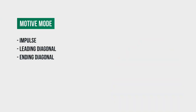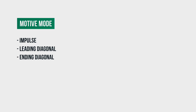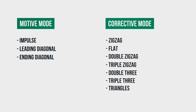You already know that there are three different types of waves forming in a motive mode: impulse, the leading diagonal, and ending diagonal. Also there are seven types of waves formed in the corrective mode: zigzag, flat, double zigzag, triple zigzag, double three, triple three, and triangles. This classification contains all types of waves that exist in the market in terms of wave analysis.